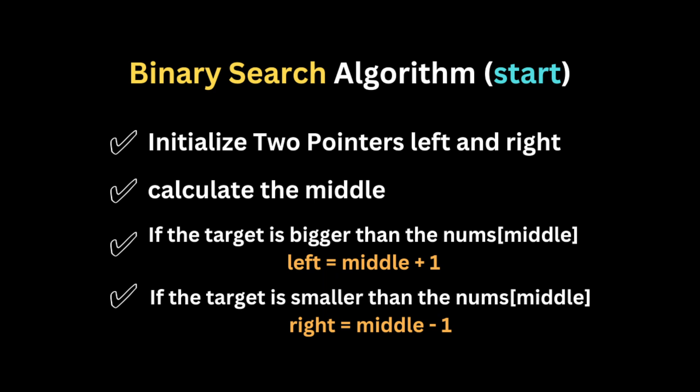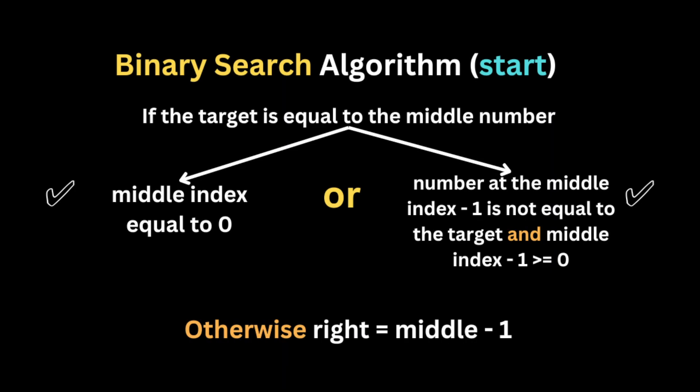Here is how binary search works to find the first appearance of the target in the array. First, we initialize two pointers: left starts at the first element and right at the last element. Then we calculate the middle pointer. If the target is bigger than the middle number, we set left to the index after middle. If the target is smaller, we set right to middle minus one.